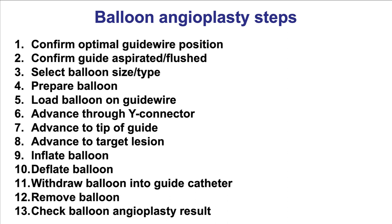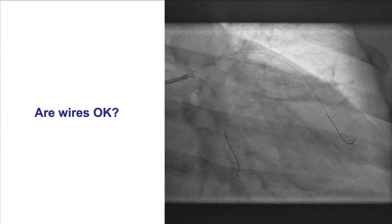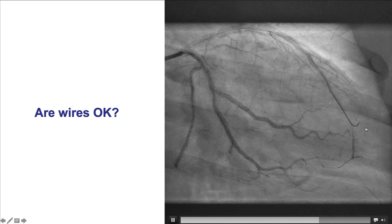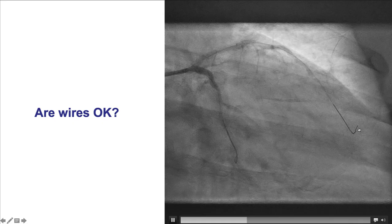Balloon angioplasty is performed in 13 steps. The first one is to confirm that the guide wire is in optimal position. Optimal means further distal in the vessel, and the tip of the wire should not be in a small branch, as is the example here, because that can lead to perforation.